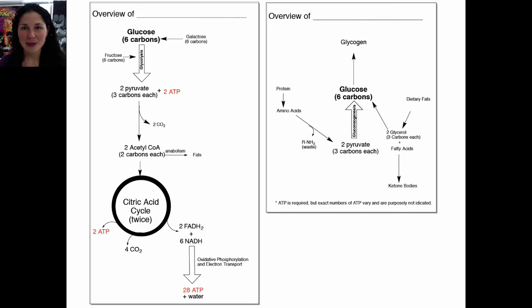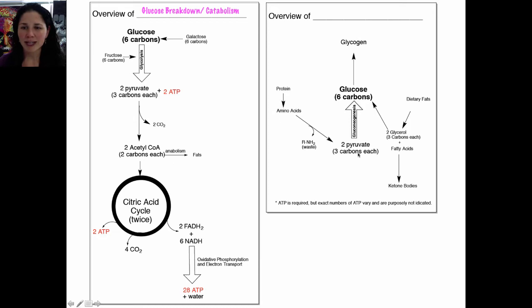Now let's look at the diagram on the next page of your activity. One of these figures is the overview of glucose catabolism, and the other is the overview of glucose anabolism. The first figure shows glucose being broken down into smaller pieces: a 6-carbon glucose is broken down into two 3-carbon pieces of pyruvate, which are broken down further into molecules of carbon dioxide and acetyl-CoA. This is glucose catabolism. The second figure shows pyruvate being converted into glucose, and glucose being converted into glycogen. Glycogen is a storage polysaccharide for glucose. This figure shows the overview of glucose synthesis from pyruvate and glycerol, or glucose anabolism.